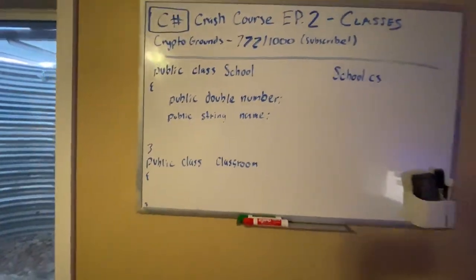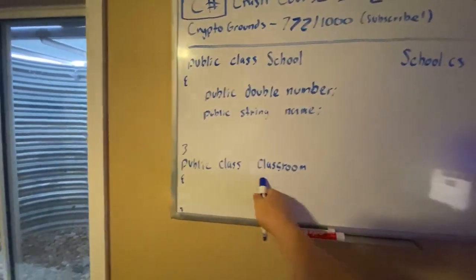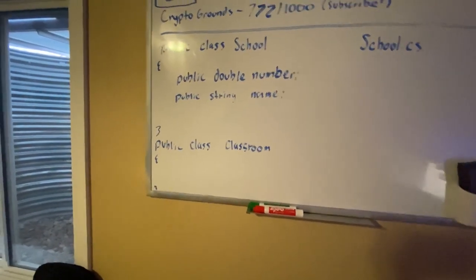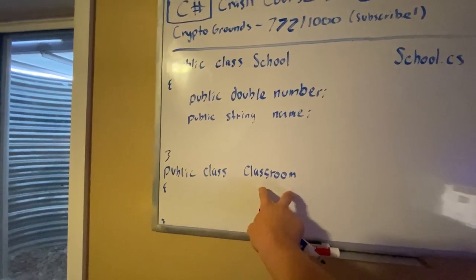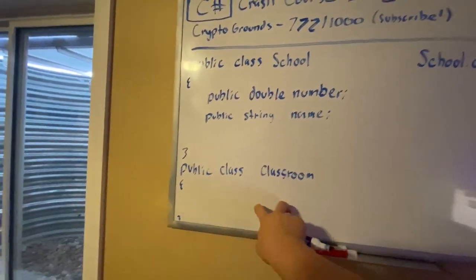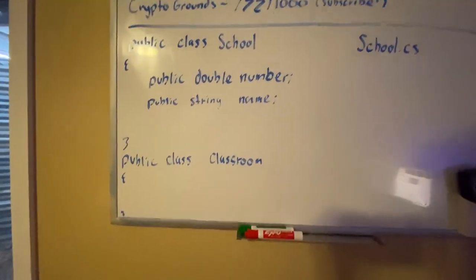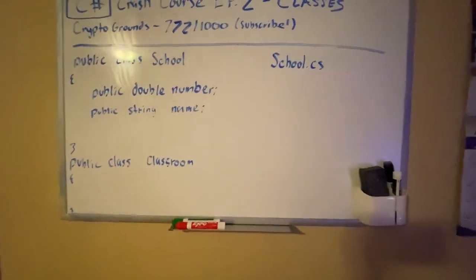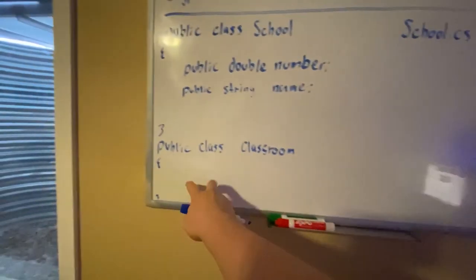What we can do here is every single class has a few methods predefined in it. We have public string toString. If we return this classroom somewhere, it'll print out all your variables in a special way by default. We can overwrite it, which I'll do in a different video.